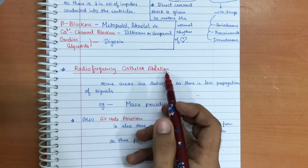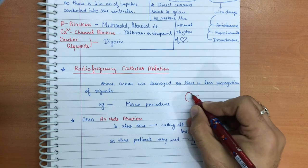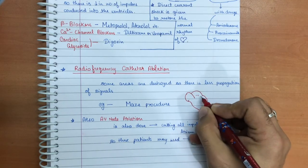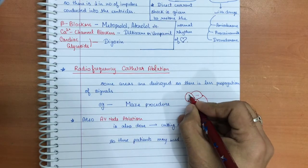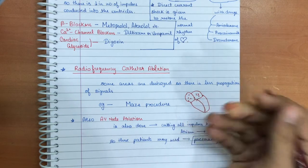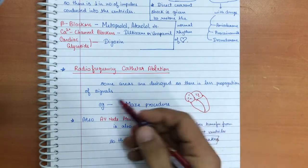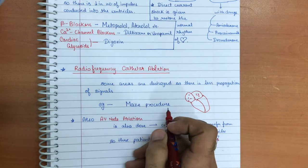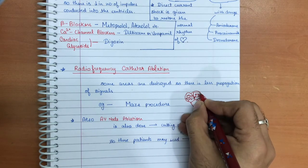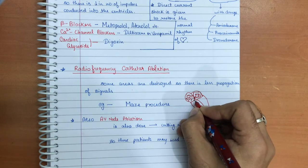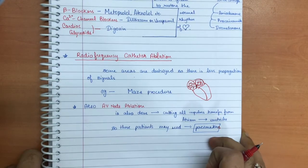If these methods do not work, radiofrequency catheter ablation can be performed. Certain areas of atrial tissue are destroyed to reduce propagation of signals reaching the AV node. One common example is the maze procedure, where an ablation maze is created so that impulses are conducted only in a specific pathway through to the AV node. This is one of the most well-known radiofrequency catheter ablation methods.